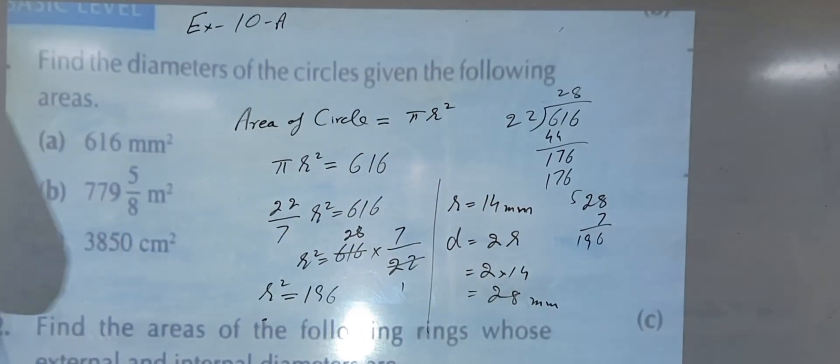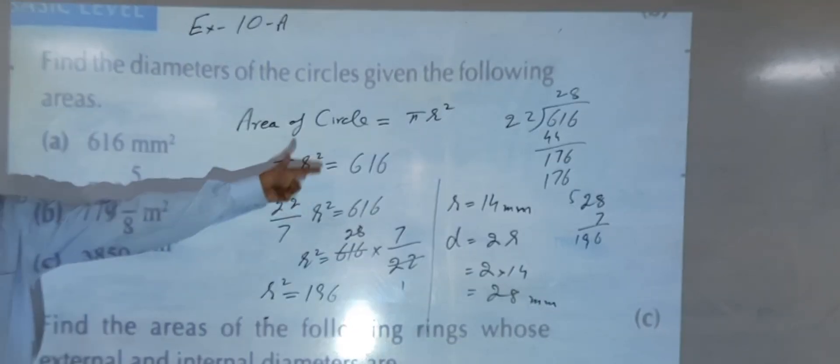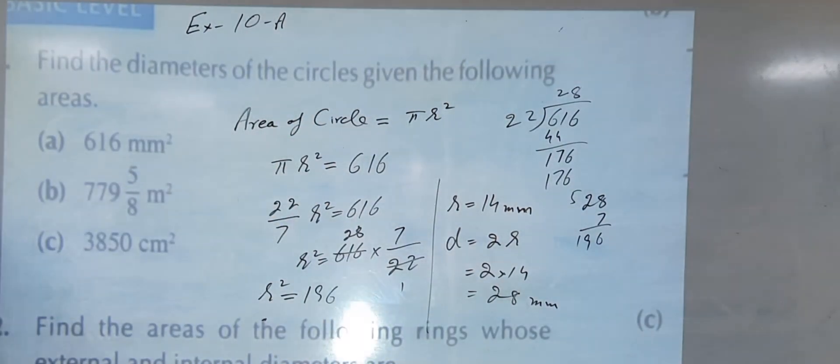So in this way you can find out all the parts when the area of the circle is given. Using the area of the circle, you can very easily find out the radius, and then double the radius to find out the diameter.